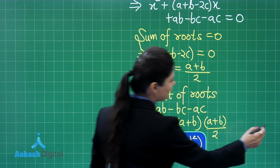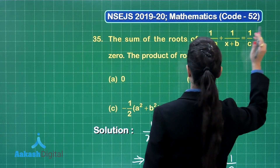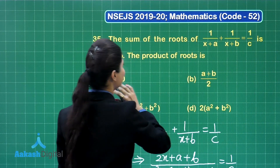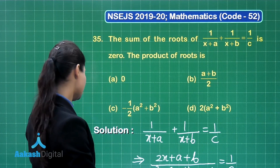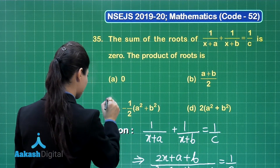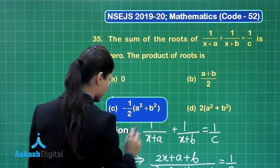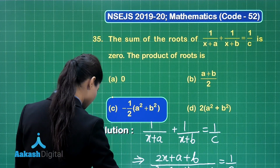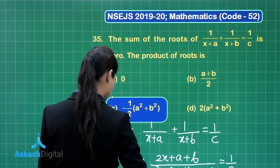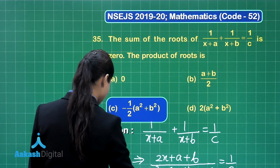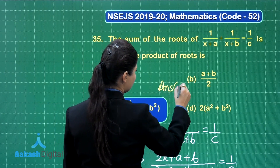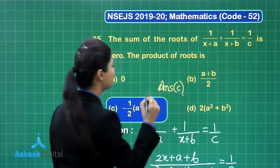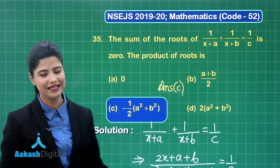So the required product of the roots is minus (a squared plus b squared) divided by 2. Out of the given options, the product of roots corresponds to option C, which is minus one-half times (a squared plus b squared). The required answer is option C for question number 35. I hope it is clear.